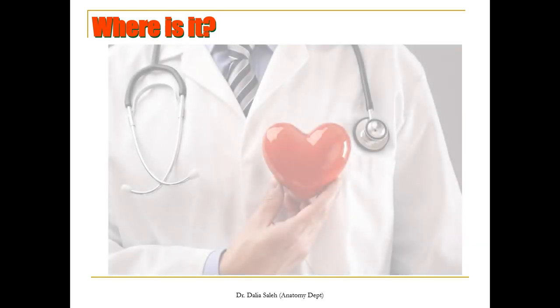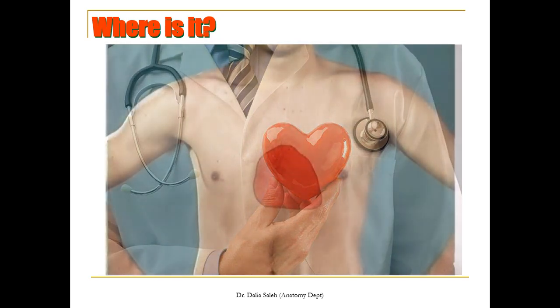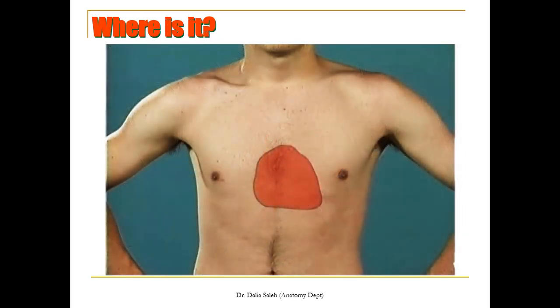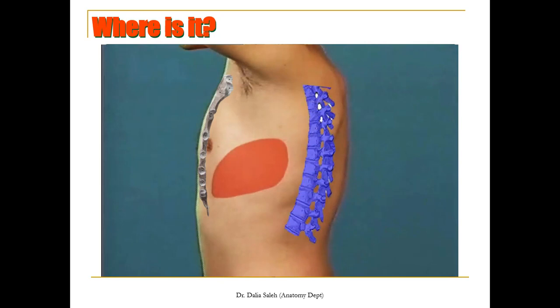Before we study the anatomy of the heart, we need to know where the heart is located in our body. Forget the common imagination that the heart is placed in the left side of your chest. In real life, the heart is almost located in the middle of the chest, slightly to the left of the midline, and lies superior to the diaphragm. In a side view, the heart almost fills the space between the sternum anteriorly and the vertebral column posteriorly.